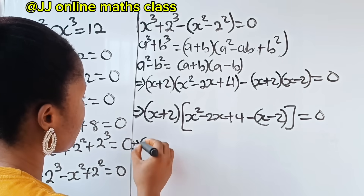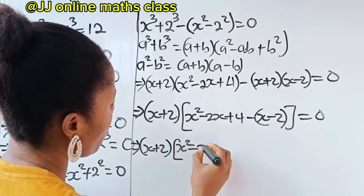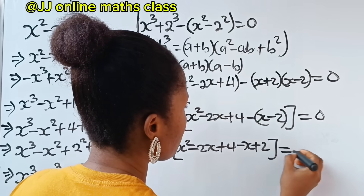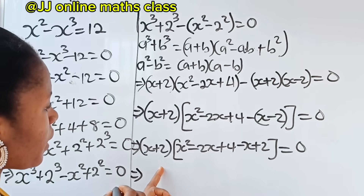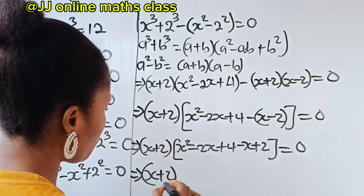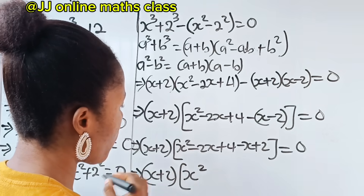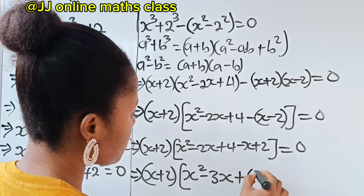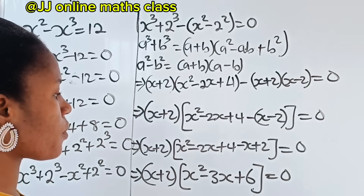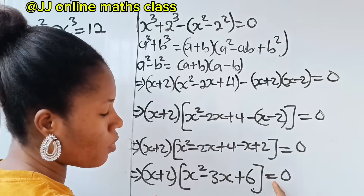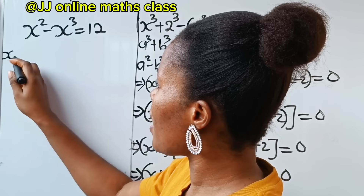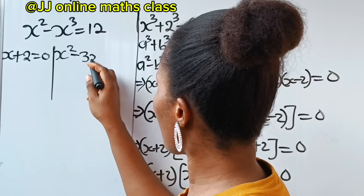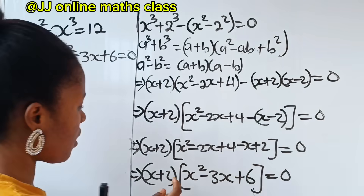So we have x plus 2 into x squared minus 2x plus 4, then this minus — we open this bracket — so we have minus x plus 2 is equal to 0. This implies x plus 2 into, collecting like terms: we have x squared, then minus 2x minus x gives us minus 3x, then 4 plus 2 gives us plus 6, is equal to 0. Then we have x plus 2 equals 0, and this quadratic is also equal to 0.